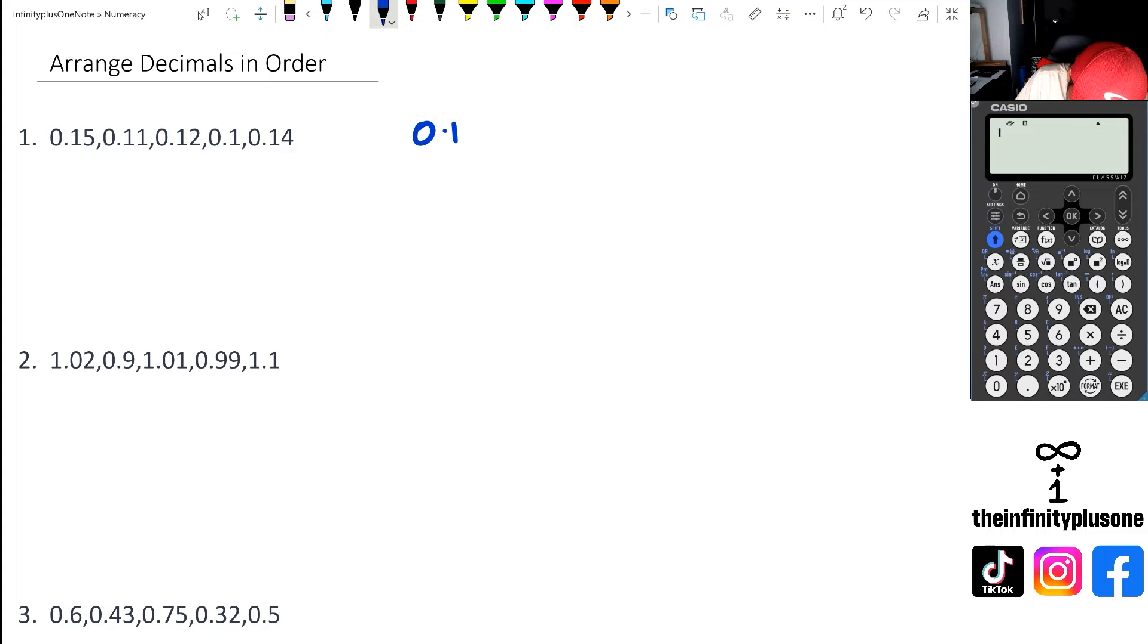Put them in a vertical format. I'm going to put down 0.15, 0.11, 0.12, then I've got 0.1 and 0.14.